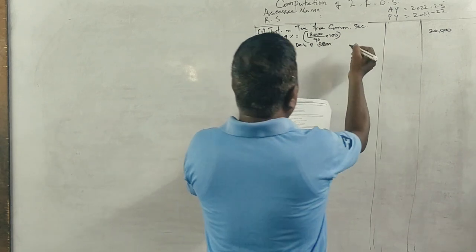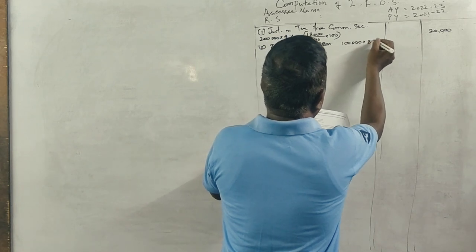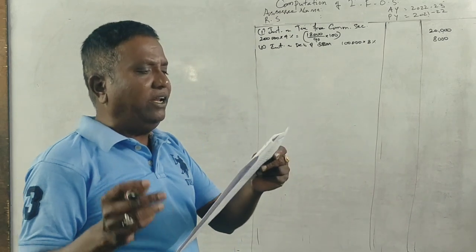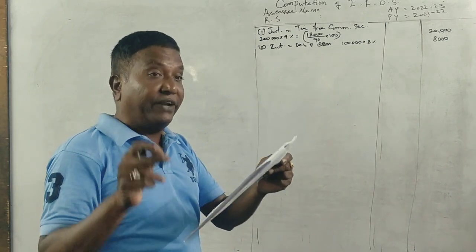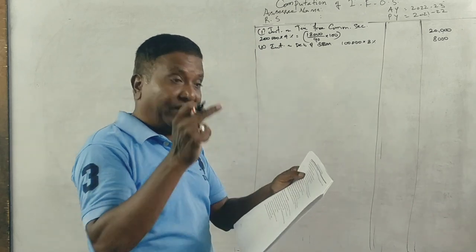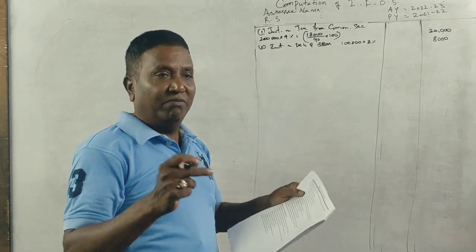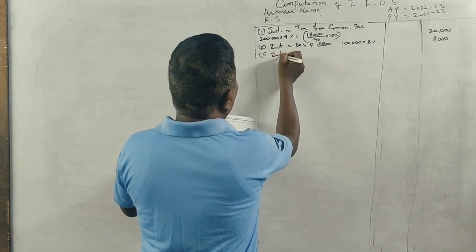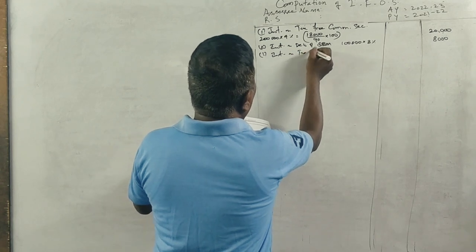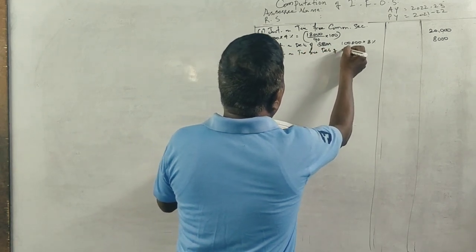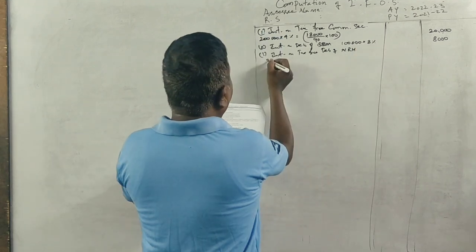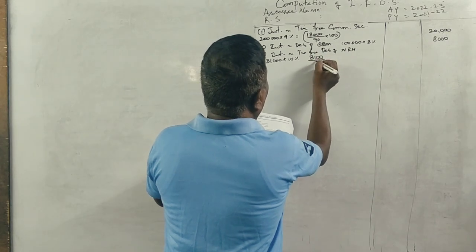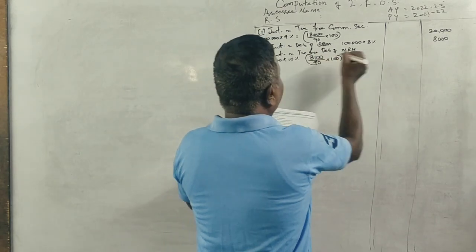Next, 81,000 10% tax-free debentures of NRM. So interest on tax-free debentures of NRM is 81,000 into 10%, which is 8,100 divided by 90 into 100.